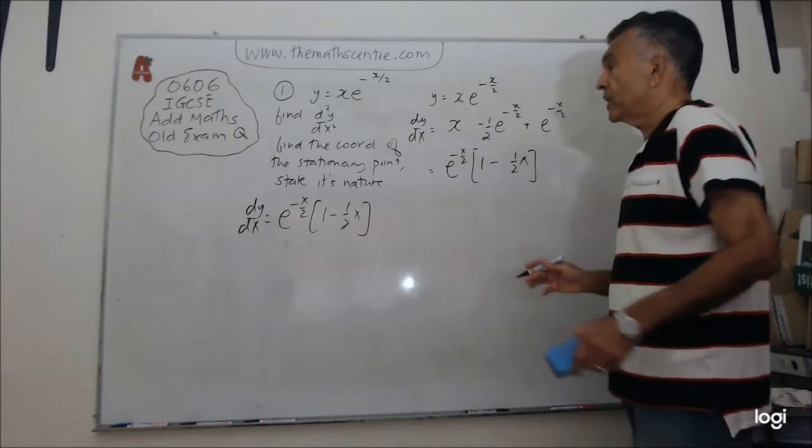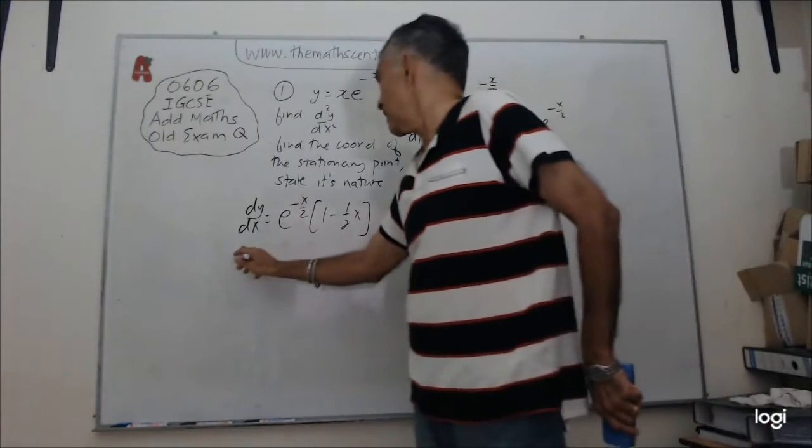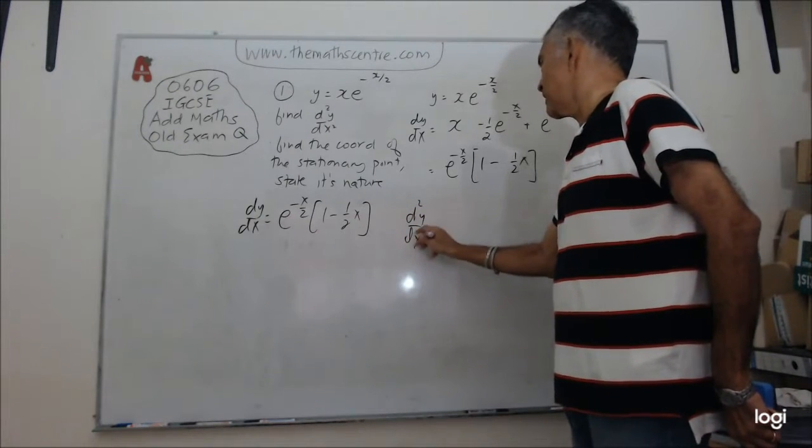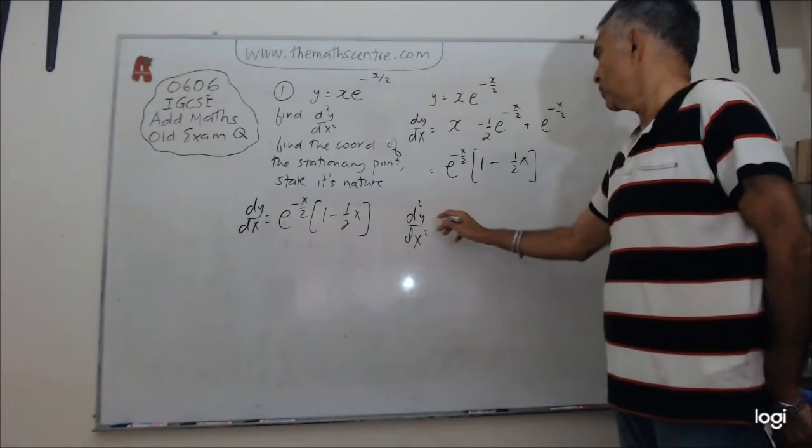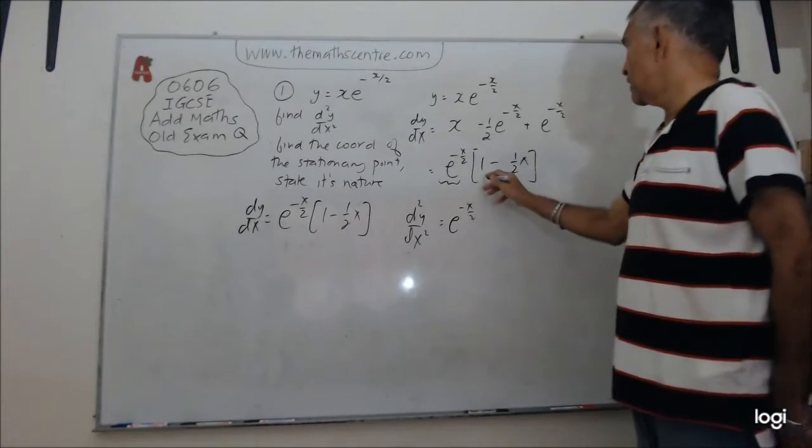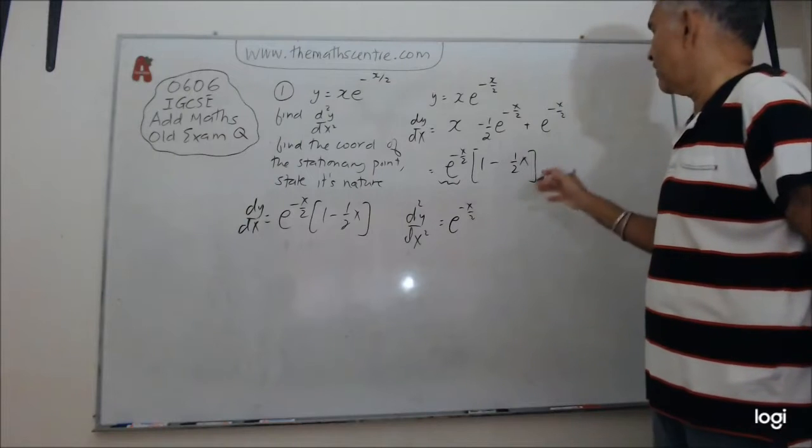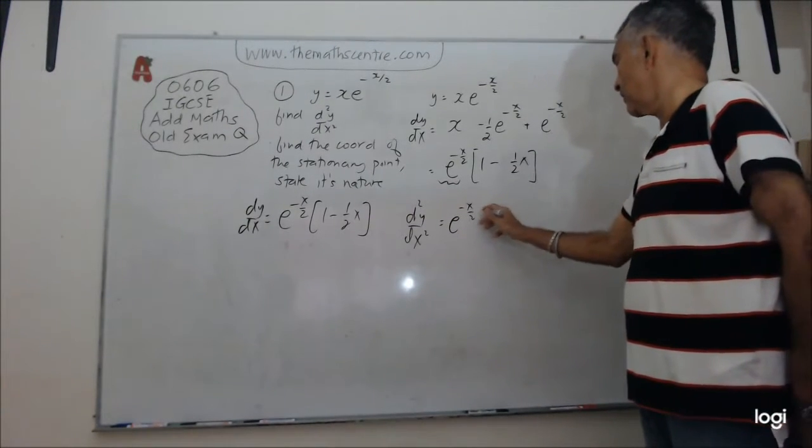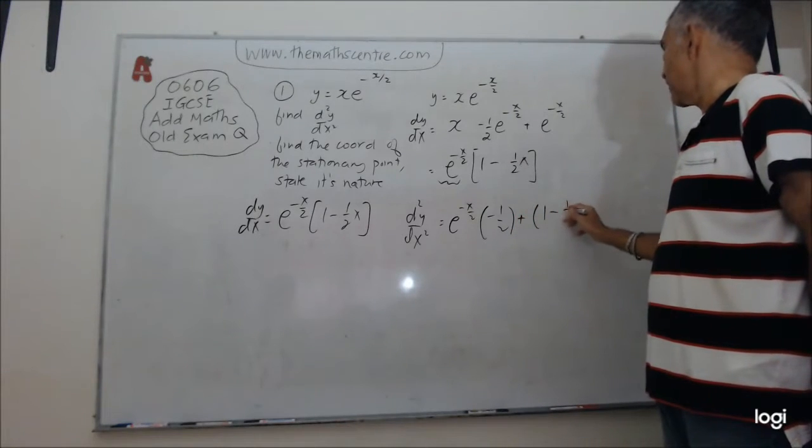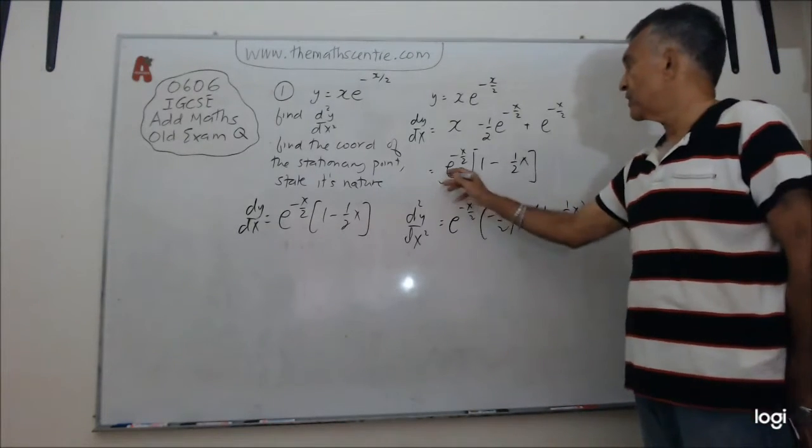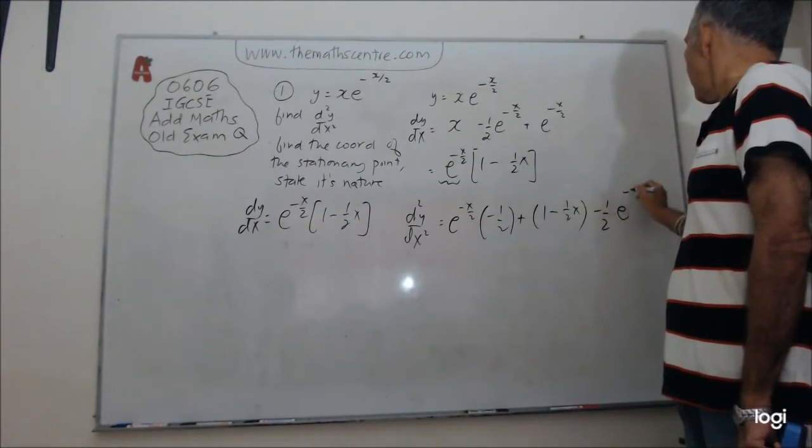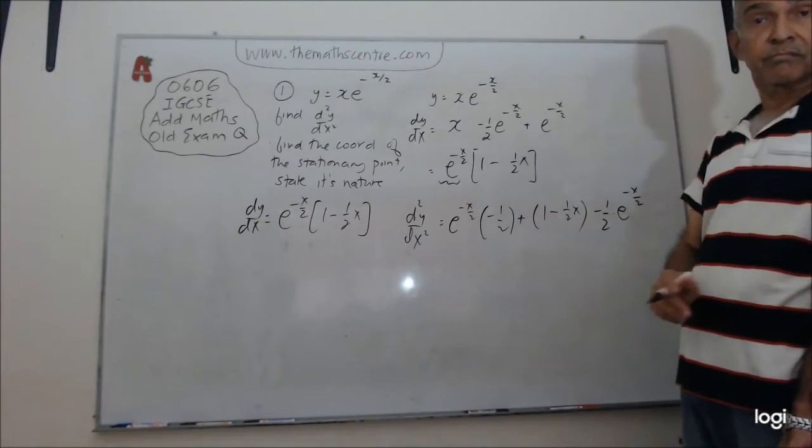Everything looks good. So now let's go ahead and find d²y/dx². Let me do it here. d²y/dx². This is the same idea, the product rule. Write down the first term. This is your first term, and this is your second term. 1 minus half x. When you differentiate that, what do you get? You get negative half. Then you write down 1 minus half x and you differentiate e to the power of minus x over 2. You will get minus half e to the power of minus x over 2.